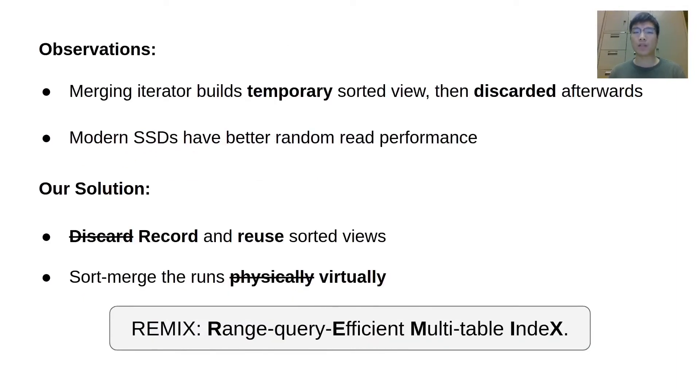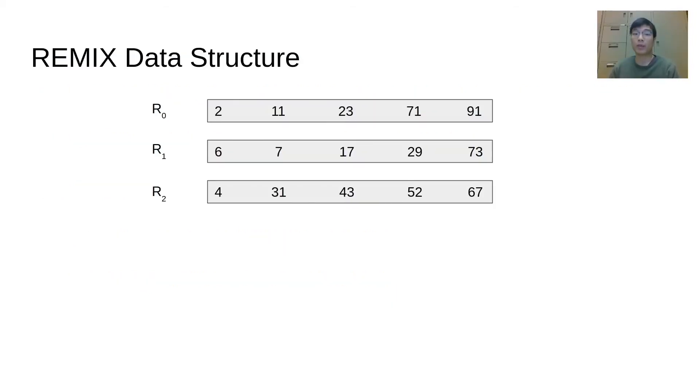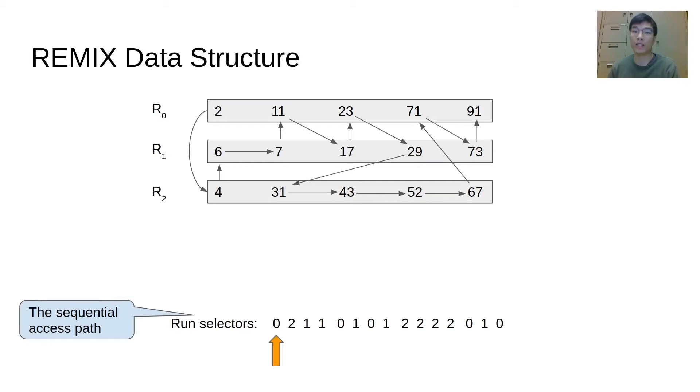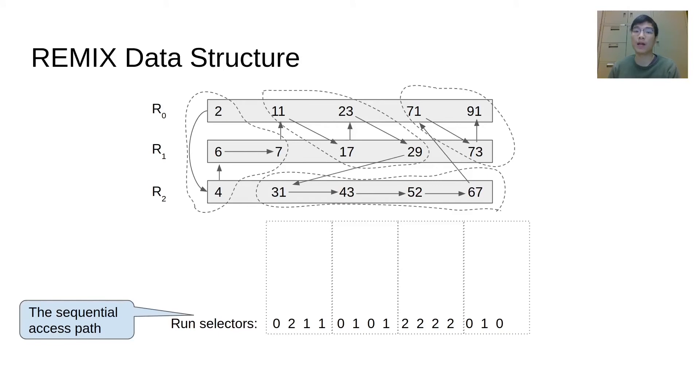To sum up, based on these observations, we propose Range Query Efficient Multi-Table Index, in short, Remix, that efficiently records the sorted views in LSM trees. Remix metadata contains three parts. First, the run selector records the sequential access path of the sorted view. If we want to access any keys in the middle of the view using only the run selectors, we would have to scan from the beginning. To avoid that, we divide the view into segments. In this example, there are at most four keys in each segment. To quickly locate a segment, we also store the smallest key in each segment, noted as anchor keys.